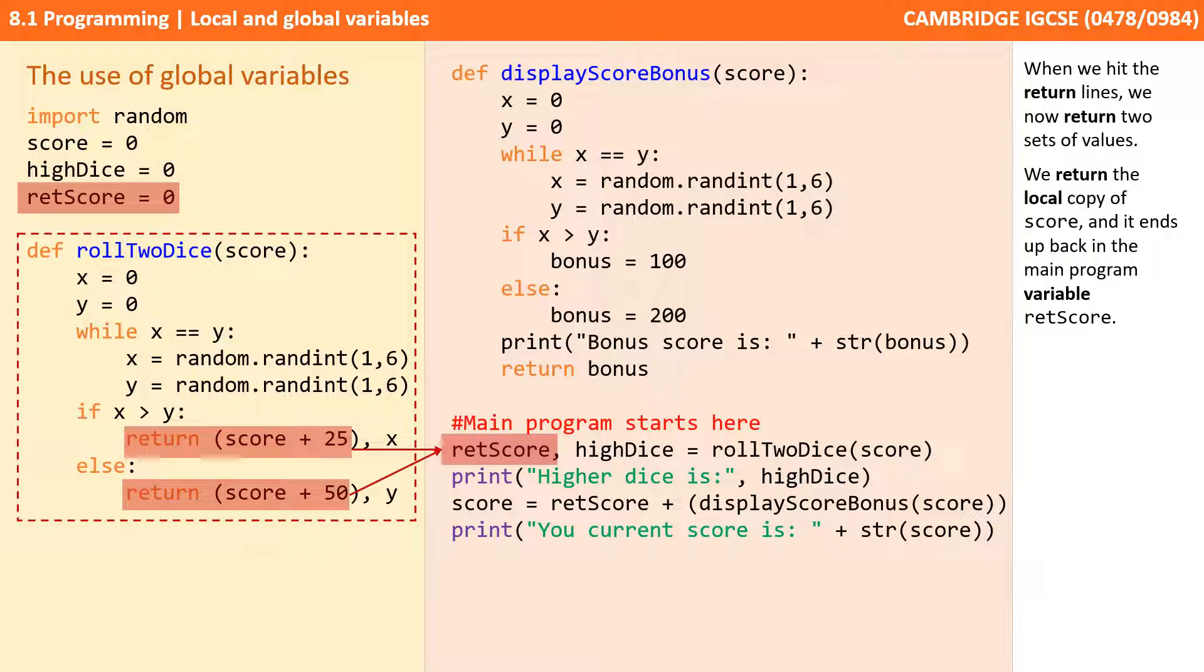When we hit the return lines, we now return two sets of values. We return the local copy of score and it ends up back in the main program variable, retScore.